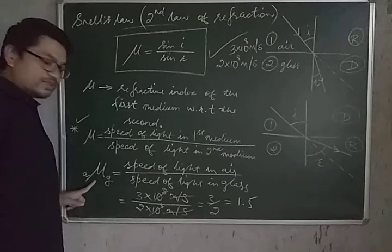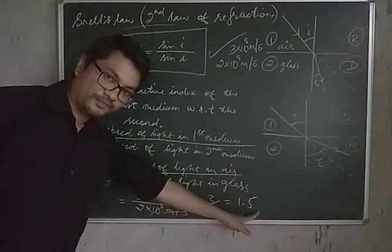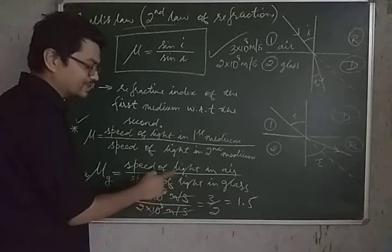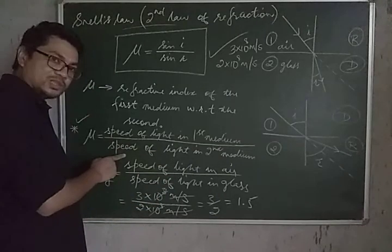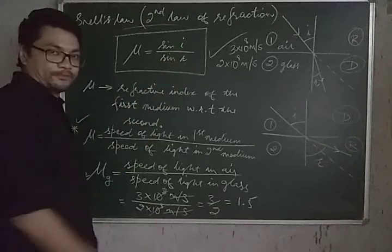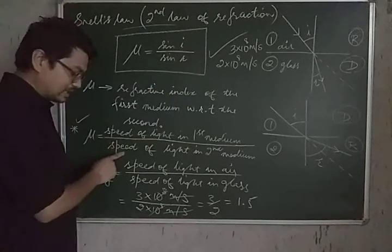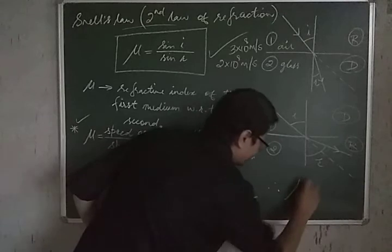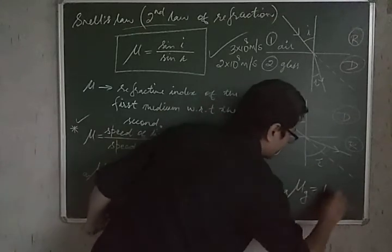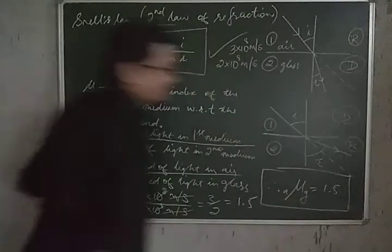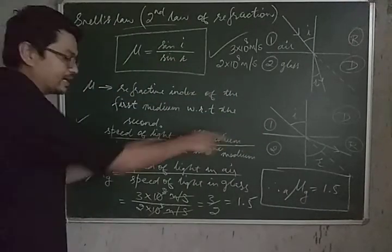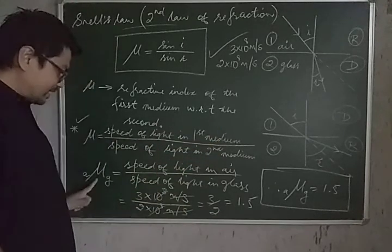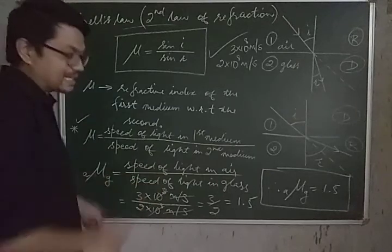You can see that refractive index does not have a unit — it is a unitless quantity — because it is the ratio of the same two quantities: ratio of speed to speed, or ratio of sin i to sin r. So refractive index of glass with respect to air is 1.5. In numericals, you may be given the speed of light in the first medium and the speed in the second medium and asked to find the refractive index of the second medium with respect to the first — this is exactly how you do it.